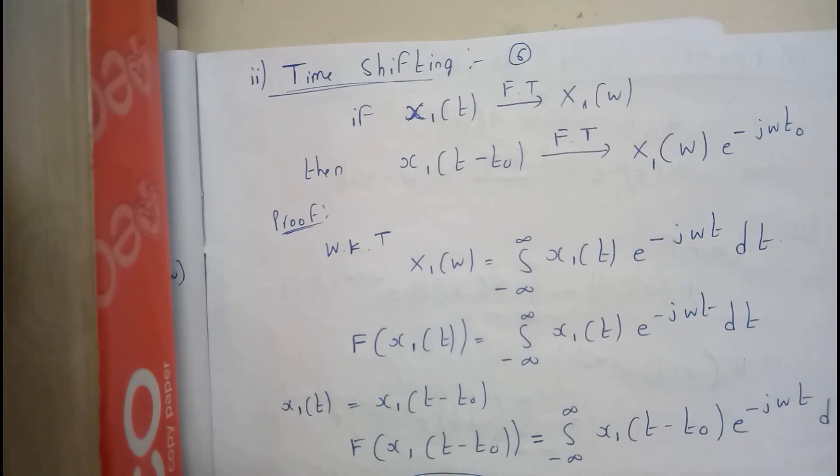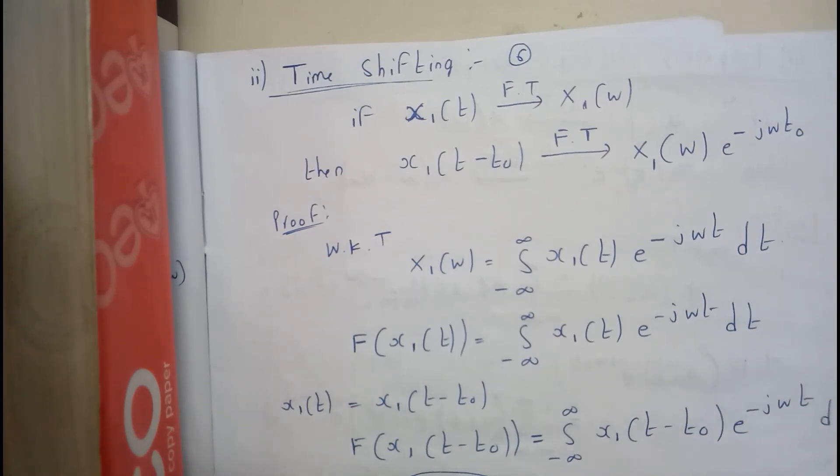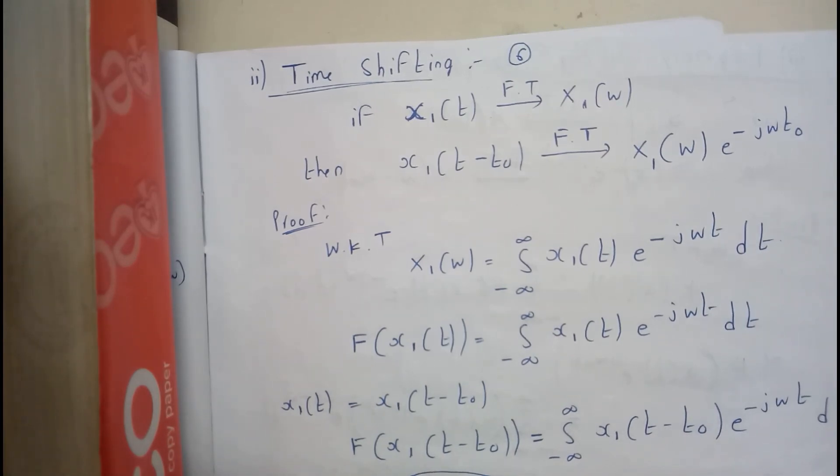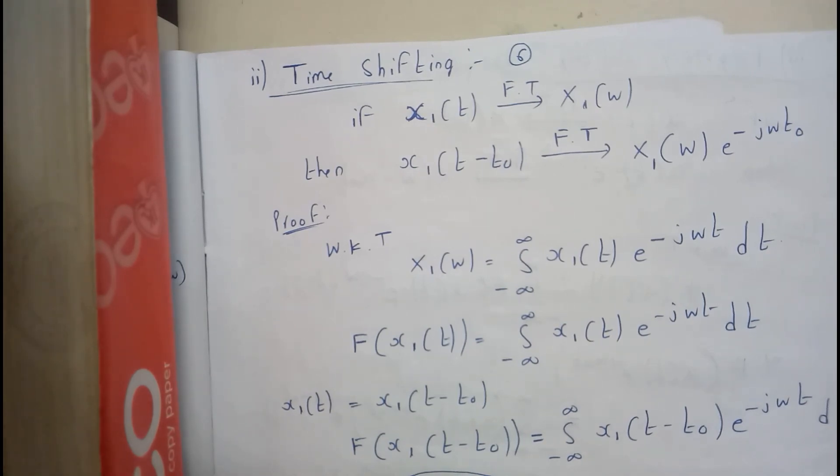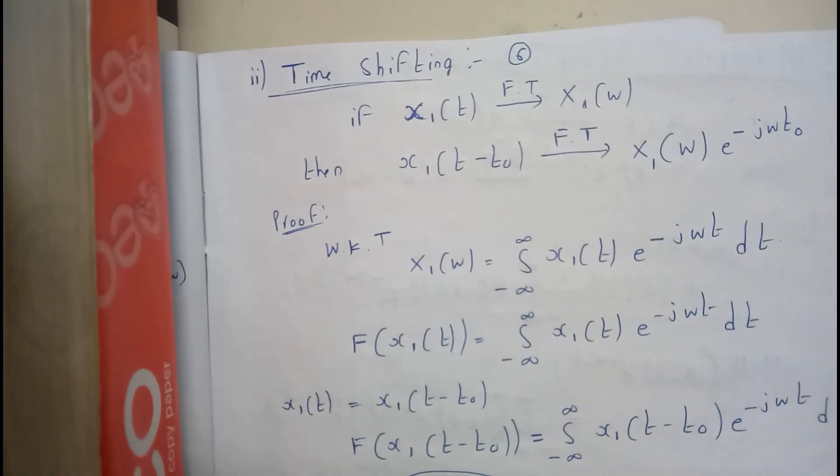If Fourier transform of x₁(t) equals x₁(ω), then Fourier transform of x₁(t - t₀) equals x₁(ω) times e^(-jωt₀). So that's what we need to prove.